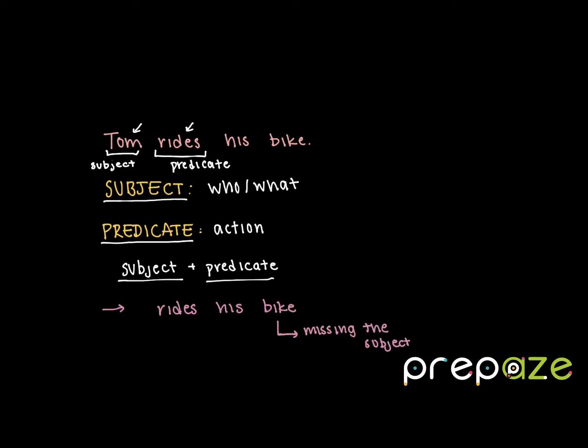Similarly, if we say just 'Tom,' in this sentence we're missing our predicate because we don't know what Tom is actually doing. So in order to have a sentence, it is important that we know both who or what is doing an action as well as the action that is being performed.